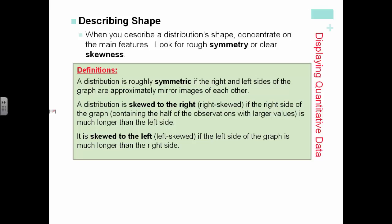A distribution is skewed to the right if the right side of the graph is much longer than the left side, and it is skewed to the left, or left skewed as we often say, if the left side of the graph is much longer than the right side.